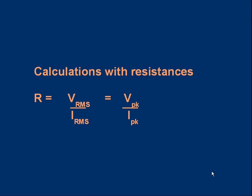If there are any resistances to deal with in calculations, the same normal relationships apply. So if I divide V_rms by I_rms I get the resistance, and of course if we know the peak voltage and peak current their ratio also gives the resistance.